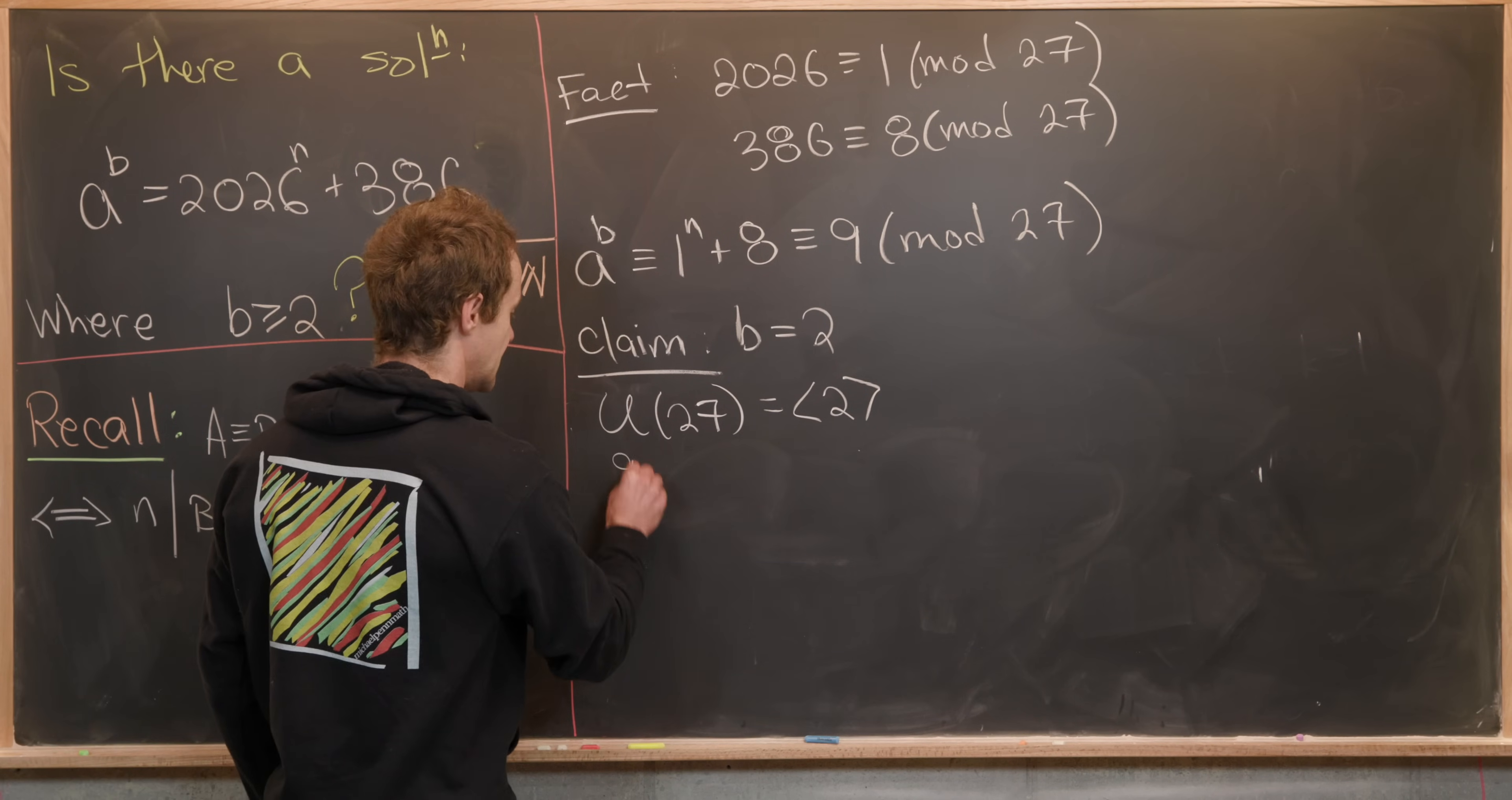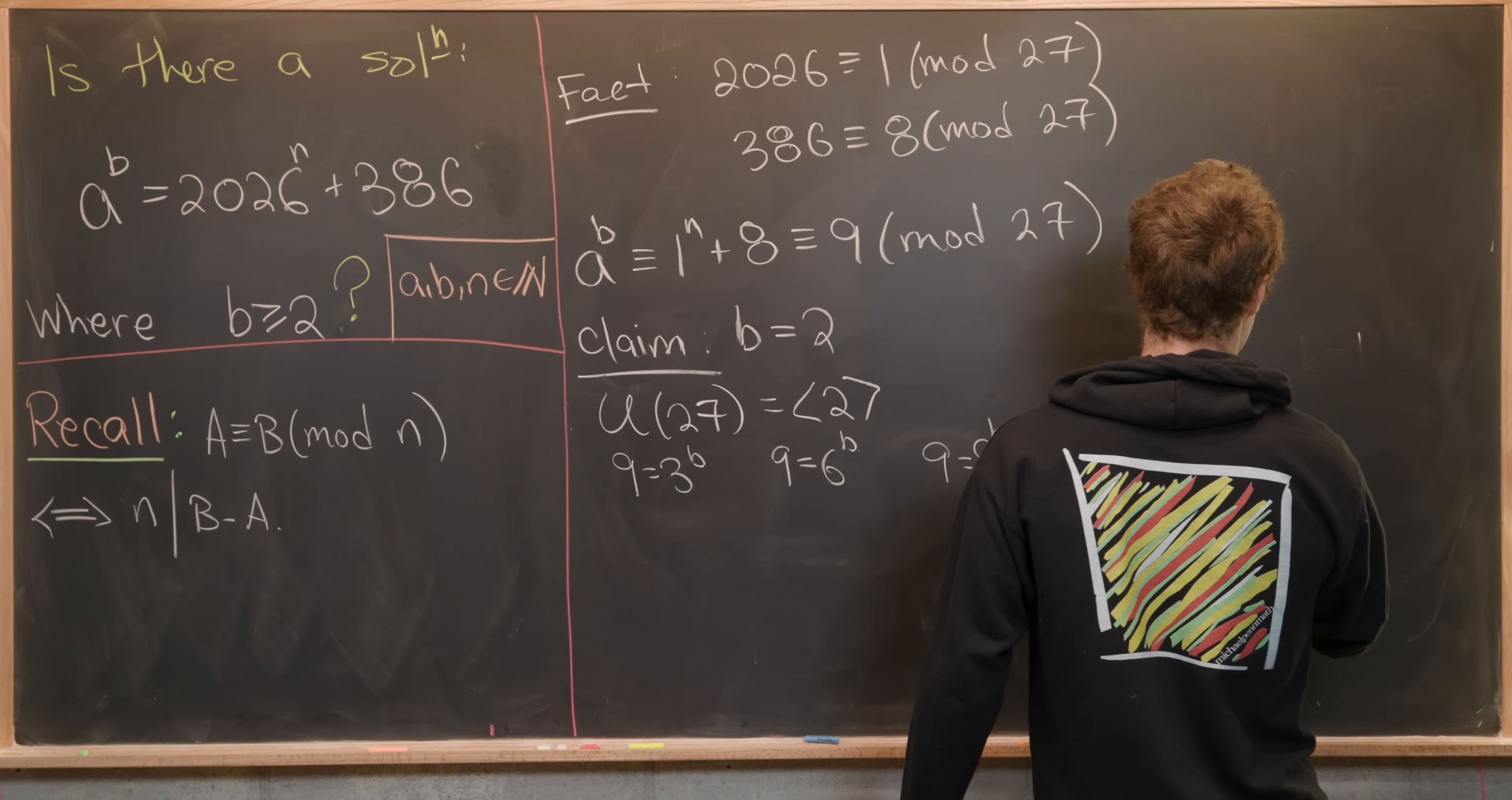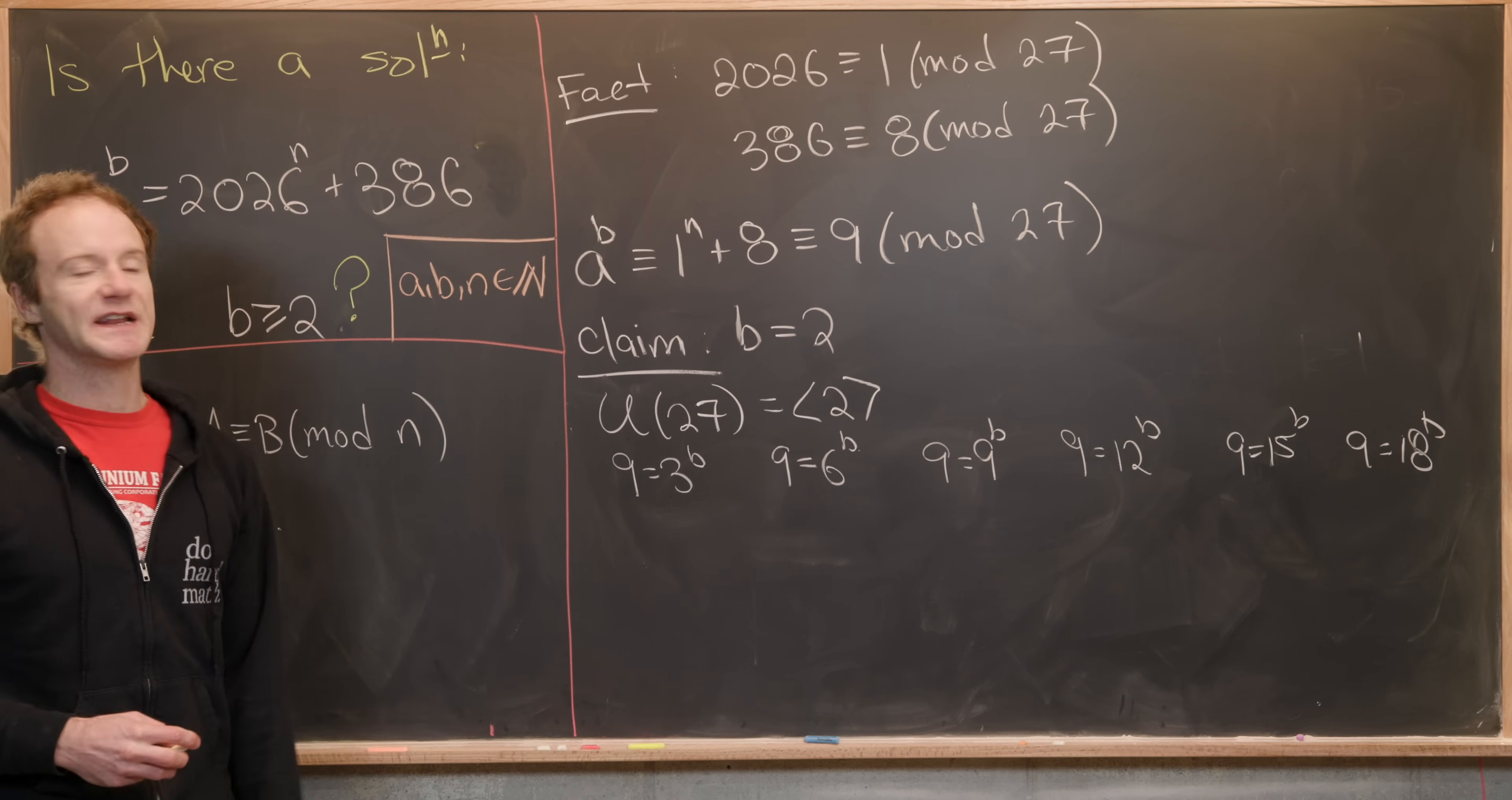So that leaves us with 9 = 3^b, 9 = 6^b, 9 = 9^b. Well that's pretty clear. 9 = 12^b. And then finally 9 = 15^b and 9 = 18^b. So at this point what we need to do is find repeated powers of these bases and see when we can achieve 9.